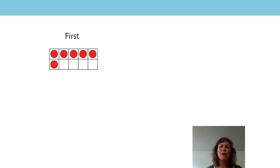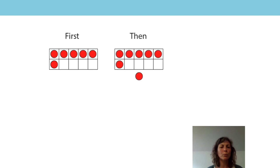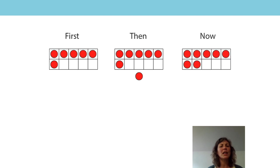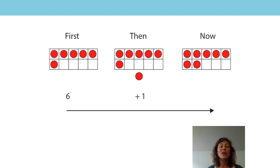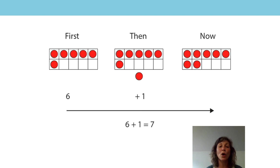What about these pictures? How many have I got, first of all? 6. Then, I've got one more. How many have I got now? What's the equation that goes with this picture? Did you say 6 plus 1? 1 more than 6 is 7. 6 plus 1 is equal to 7.